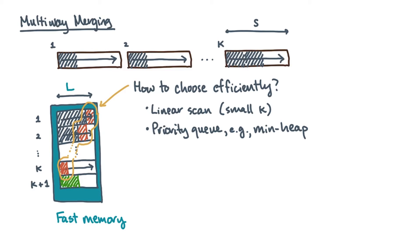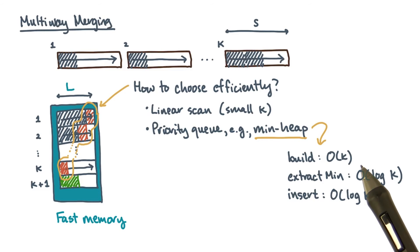It would then have the following operational costs. After loading the first K blocks, you'd have to build the heap, which would cost you O(K) operations. Then, anytime you wanted to find the next item to merge, you'd call an extract min, which would cost you log K operations. And after you extract an item, you might need to replace it, which would also have a logarithmic cost. Now remember, these are all fast memory operations. So when we consider these costs, we'll just count them as comparisons.